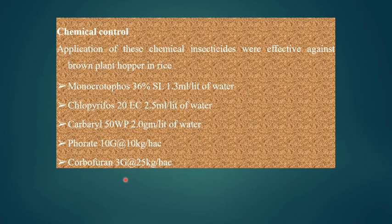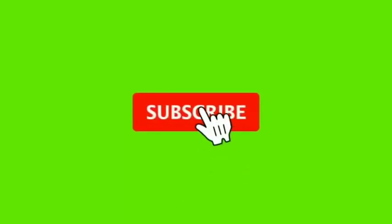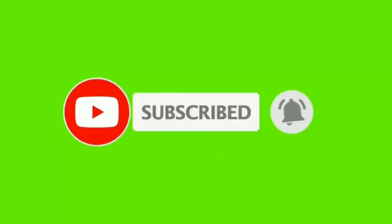These are the key points on the brown plant hopper of rice, covering the egg stage, nymphal stage, and adult stage — the three life stages that are destructive to the rice crop. Implementing proper management measures will reduce the brown plant hopper and increase healthy rice crop yield. If you like this video, please subscribe to the channel and click on the bell icon.